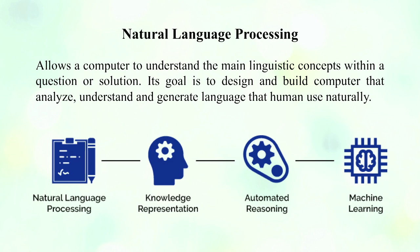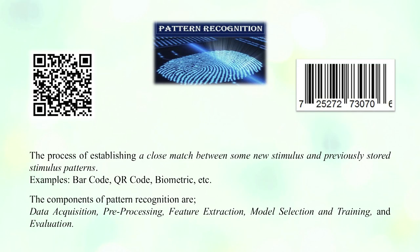Looking at the schematic representation of NLP: it involves knowledge representation, automatic reasoning by machines, and machine learning. The next component is pattern recognition. There are two forms: the process of establishing a close match between a new stimulus and a previously stored pattern. Examples include barcode, QR code, and biometrics. The components of pattern recognition are data acquisition, pre-processing, feature extraction, model selection, training, and evaluation.